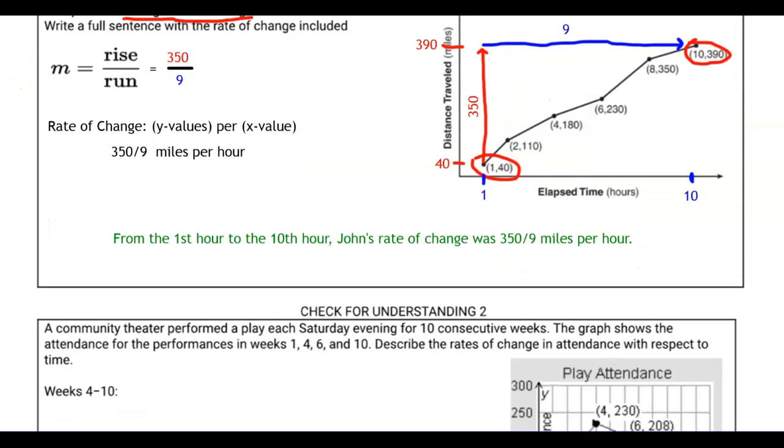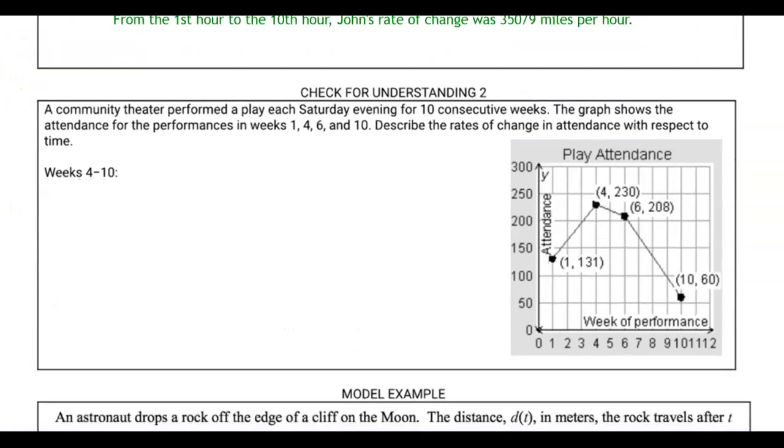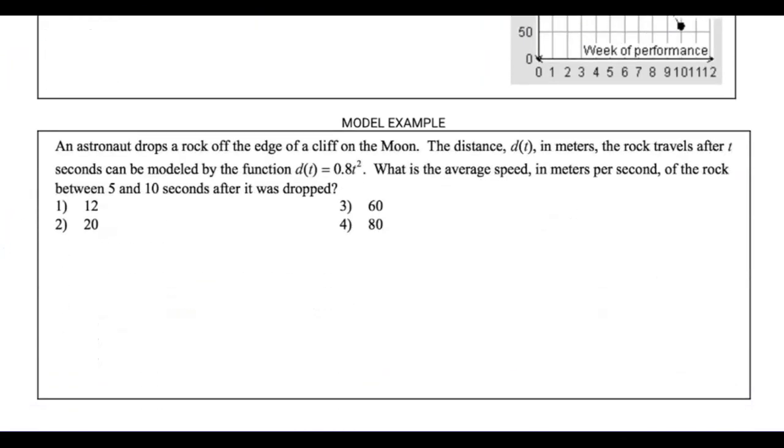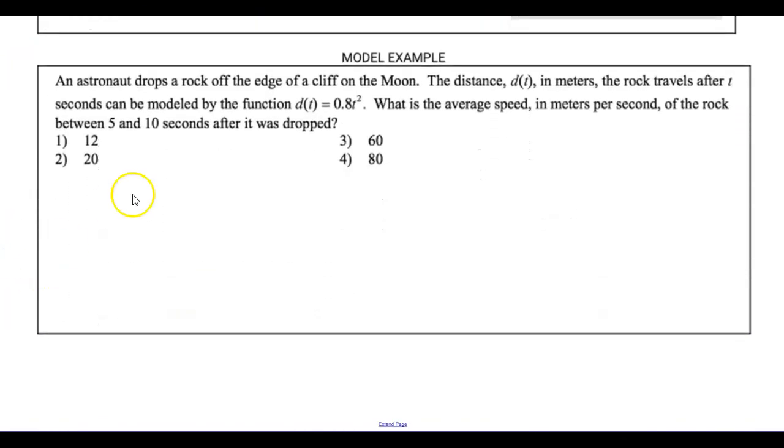Okay, not bad. Remember the check for understanding number two is going to be your responsibility, not mine. So let's do one more model example. In this model example, it talks about an astronaut dropping a rock off the edge of a cliff on the moon. Distance in meters, the rock travels after t seconds. So it's giving us meters and seconds. Those are the units. It can be modeled by the function d of t is equal to 0.8 t squared.